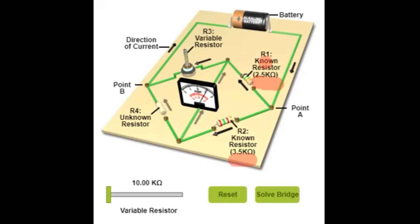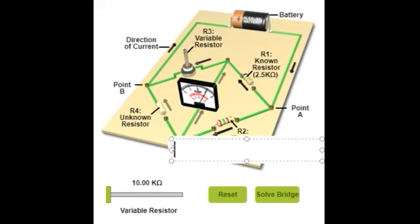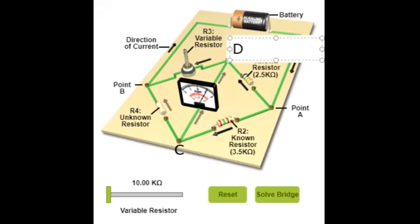R4 is an unknown resistance which is to be determined. At two opposite corners, A and D, a galvanometer is connected. At the other two opposite junctions, A and B, a battery is connected. So this is a Wheatstone bridge circuit containing four resistors arranged in a quadrilateral, with a galvanometer at one pair of opposite junctions and a battery at the other.